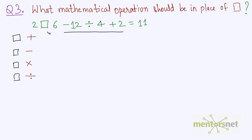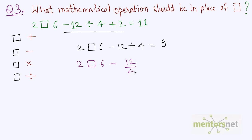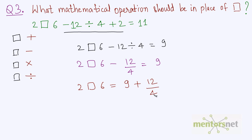We'll have to isolate the unknown operation first. We can move the 2 to the right side, so we have: 2 box 6 minus 12 divided by 4 equals 11, and that 2 becomes minus 2, so 11 minus 2 is 9. Now we have 2 box 6 minus 12 by 4 equals 9. Moving 12 by 4 to the right: 2 box 6 equals 9 plus 12 by 4. Solving 12 by 4 gives 3, so 9 plus 3 equals 12. Therefore 2 box 6 equals 12.